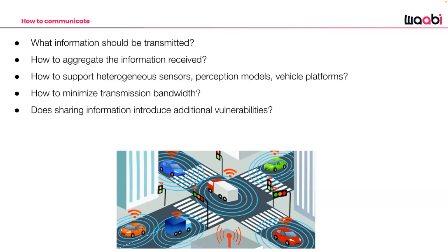Although 5G significantly improves bandwidth, high-resolution point clouds and images still require compression to be sent with low latency, so vehicles can respond in time to actors emerging from occlusion. Additionally, like all technology, vehicle-to-vehicle communication is vulnerable to hacking, noise, and errors. We need to transmit messages securely and be robust to perturbations for reliable V2V communication.